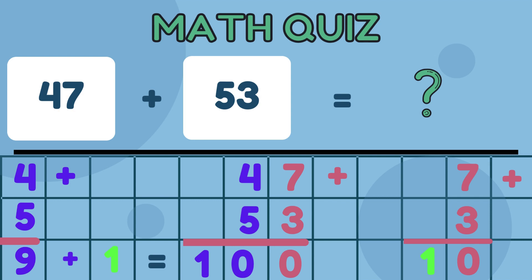Write down the result for each place. The sum in the 1's place is 0. Since we have 10, and we carry over 1. And the sum in the 10's place is 10. Step 4. Put the two sums together. So, 47 plus 53 equal 100.